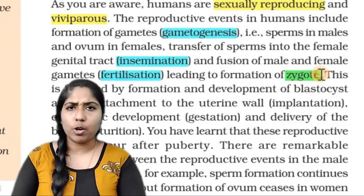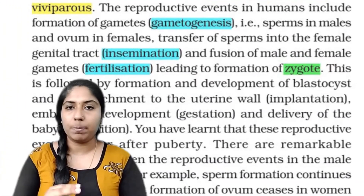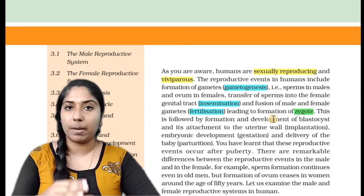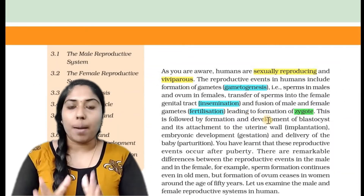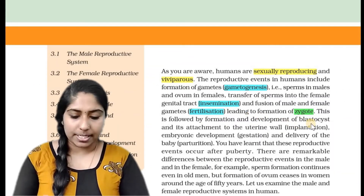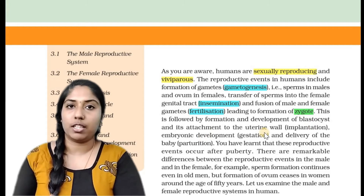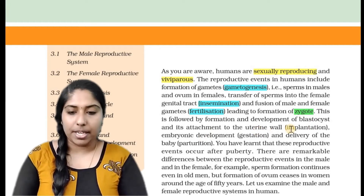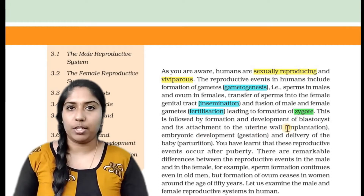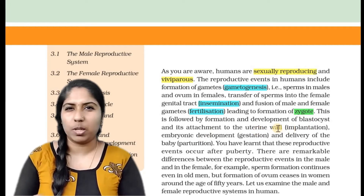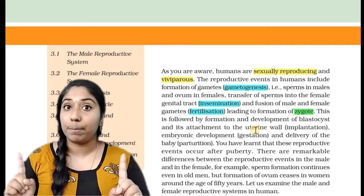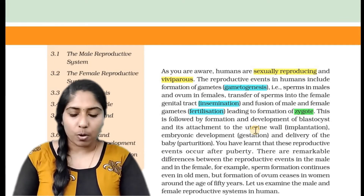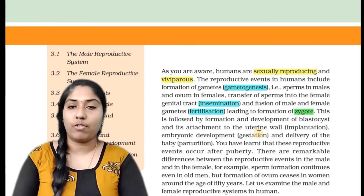After the zygote forms, the cells divide and develop. There is a stage where a blastocyst forms — this is called blastulation. In other textbooks it may not be called blastulation, but blastocyst formation.